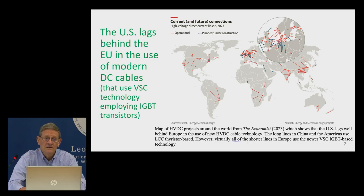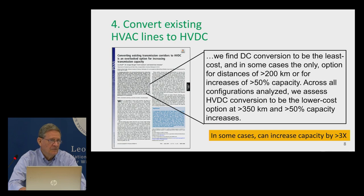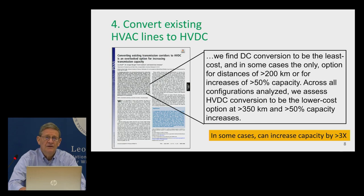The U.S. lags behind the EU in the use of modern DC cables. There are many modern DC cables being used in the North Sea, and there's an opportunity for the U.S. to learn from the EU in that respect. You can also convert existing high-voltage AC lines to high-voltage DC — Germany is actually doing that on one of its north-south lines bringing power from the north down to the south.